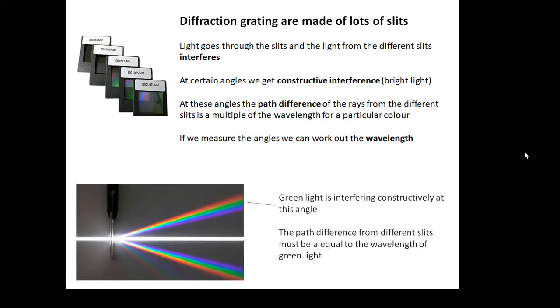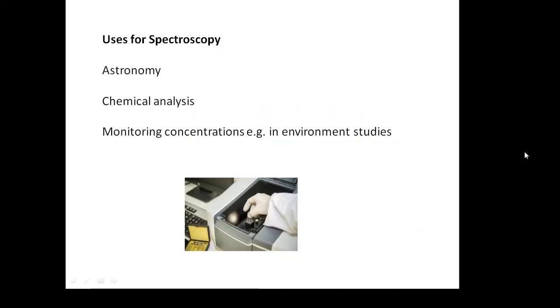So we shine light through the diffraction grating and then the different wavelengths or the different colours, we get constructive interference at different angles. For example, in this photograph, you see that green light is at a particular angle. And that's because the path difference for different slits is equal to the wavelength of green light at that angle.